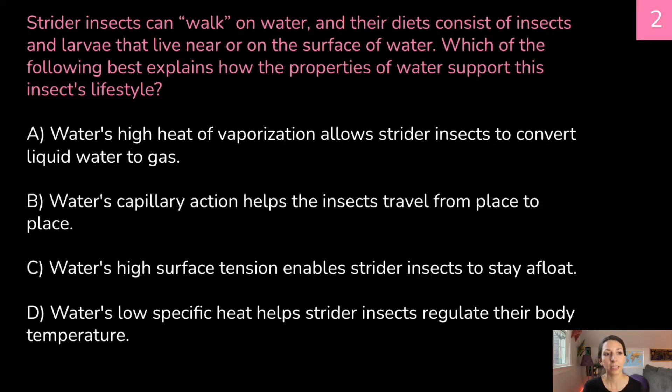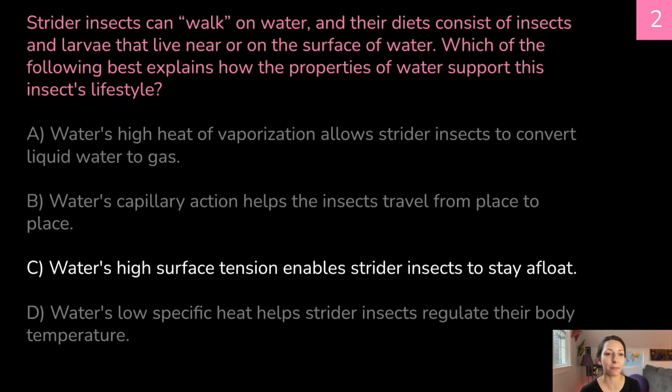Think about it. Three, two, one. Answer is C, water's high surface tension enables strider insects to stay afloat. That one's pretty straightforward as well, but remember many of the different properties of water contribute to survival of living things in lots of different areas.